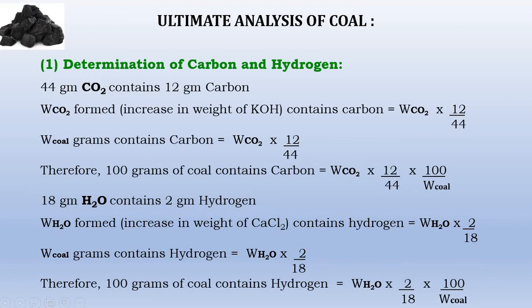We know that ultimate analysis of coal involves the determination of carbon, hydrogen, nitrogen and sulfur percentages by experiments, and oxygen is determined indirectly. In the determination of carbon and hydrogen, the combustion method is used. The carbon and hydrogen present in the coal are converted into carbon dioxide and water vapors in the combustion tube in the presence of oxygen.